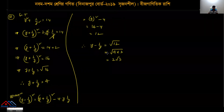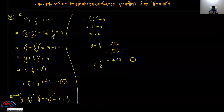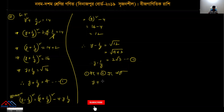We find y - 1/y = 2√3. We note one equation and another equation. Dividing one by the other: the first equation gives y + 1/y = 4, and the second gives y - 1/y = 2√3.